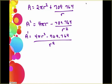So you should end up with your derivative as 4 pi r cubed minus 709.764 over r squared.